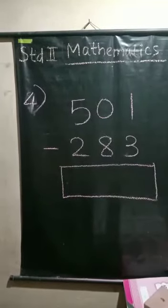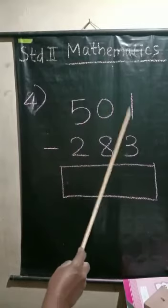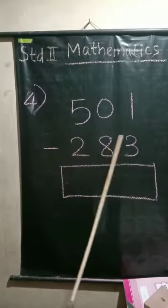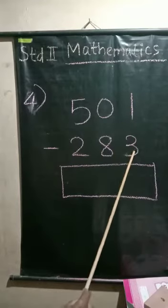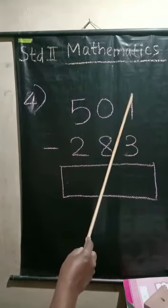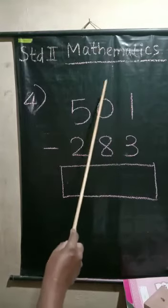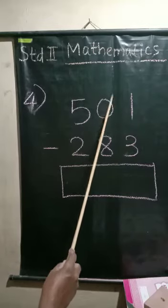Children, see question number 4: 501 minus 283. Take the ones place digit, 1 minus 3. Smaller number on the top, so borrow 1 from the next place. Next place is a zero.